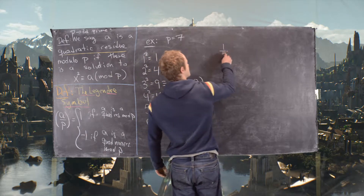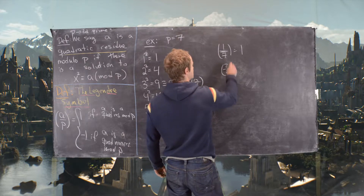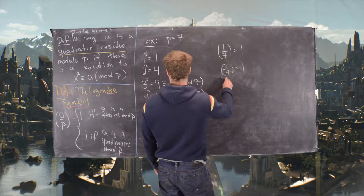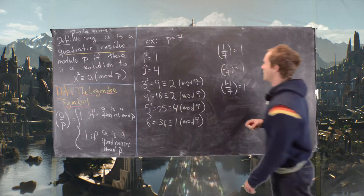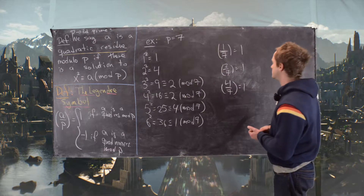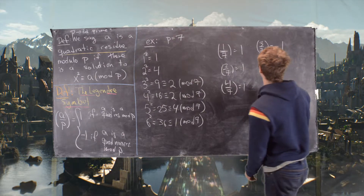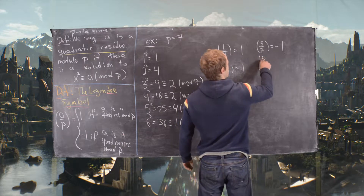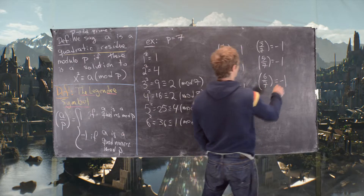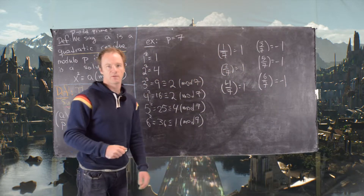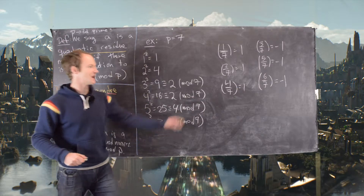So 1, 2, and 4 are quadratic residues mod 7, meaning (1/7) = 1, (2/7) = 1, and (4/7) = 1. The other three numbers are quadratic non-residues, so (3/7) = -1, (5/7) = -1, and (6/7) = -1.